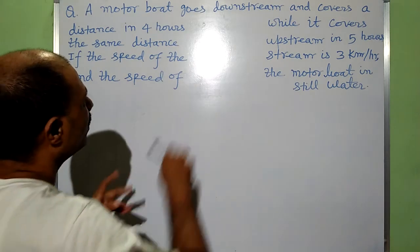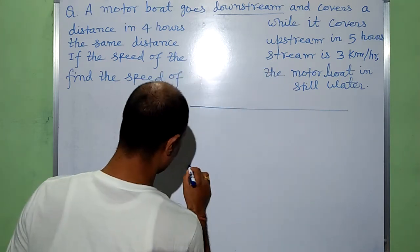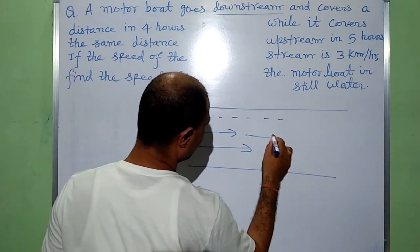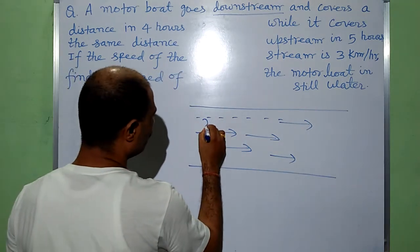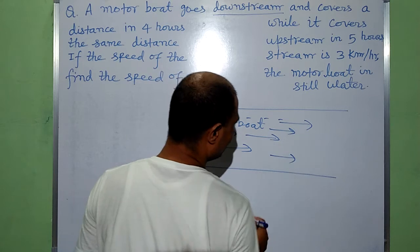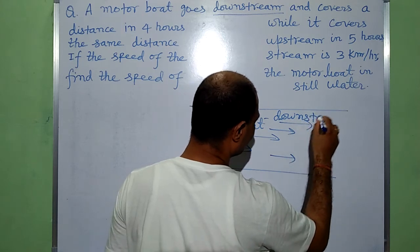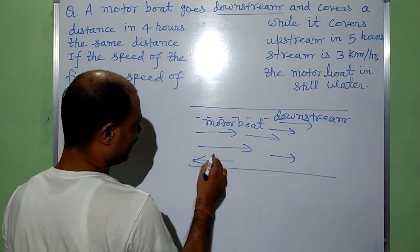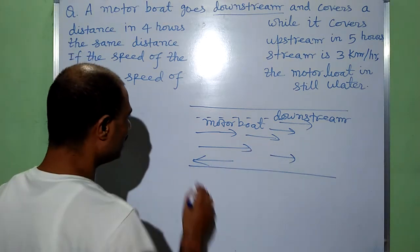First of all, try to understand about downstream and upstream. Suppose this is a river and water is flowing in this direction. When a motorboat goes in this direction, that is called downstream. And when the same boat comes in the opposite direction — opposite to the current or flowing of water — that is called upstream.